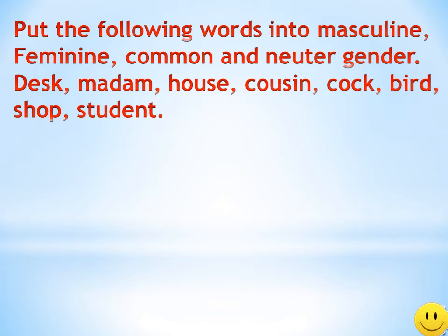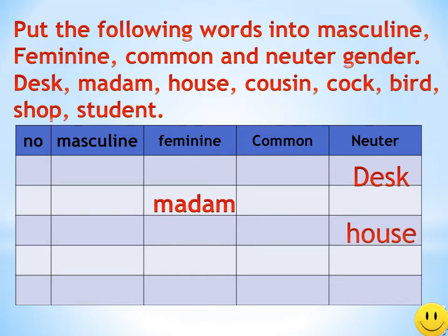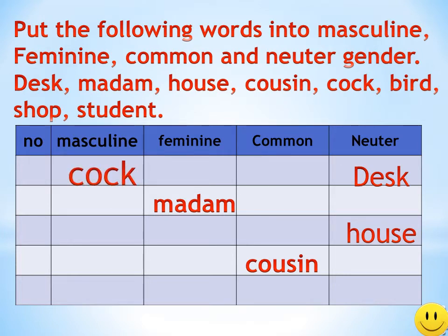Put the following words into masculine, feminine, common and neuter gender: desk, Adam, house, cousin, cock, bird, shop and student. Desk — Neuter Gender. Adam — Masculine Gender. House — Neuter Gender. Cousin — Common Gender. Cock — Masculine Gender. Bird — Common Gender. Shop — Neuter Gender. Students — Common Gender.